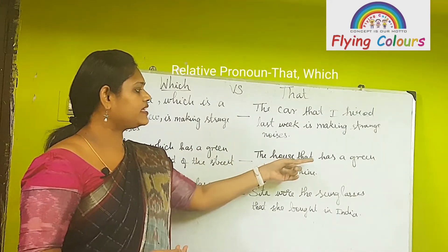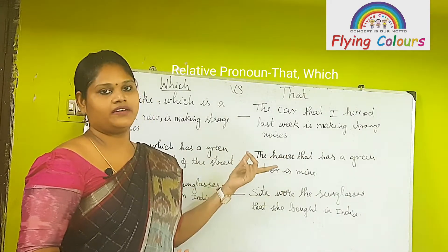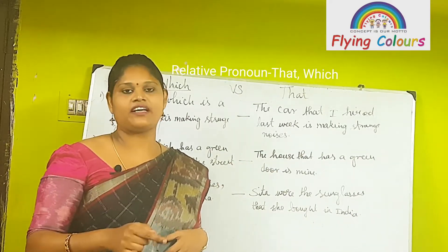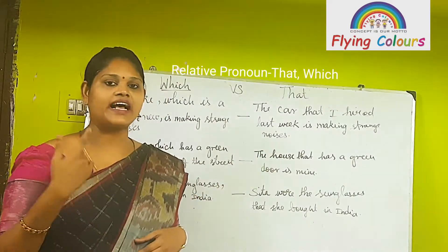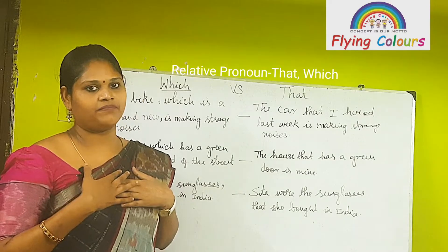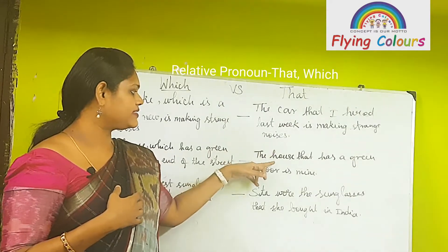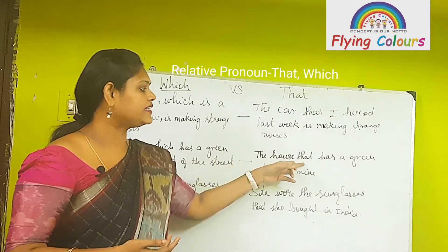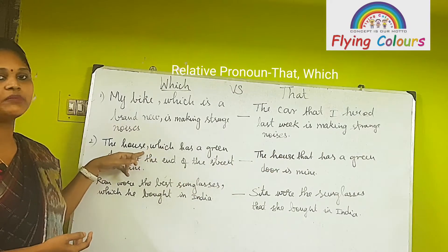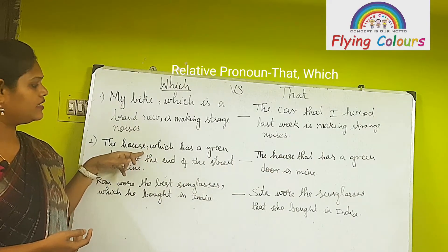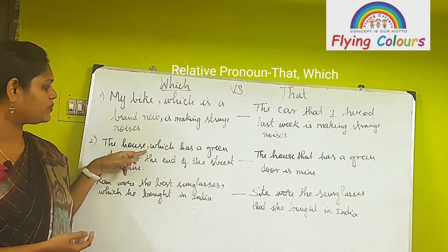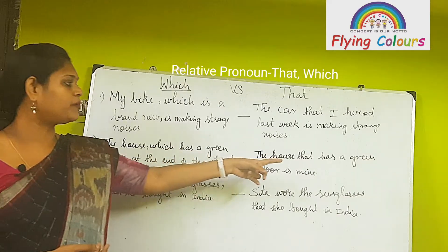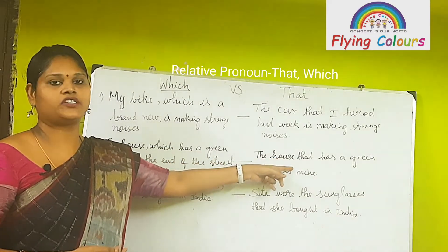Now consider: 'The house that has a green door is mine.' Here we are talking about the particular, specific house that has a green door. When we talk about particular things, we use 'that.' Also note: 'which' is set off by commas, whereas 'that' does not use any punctuation marks.